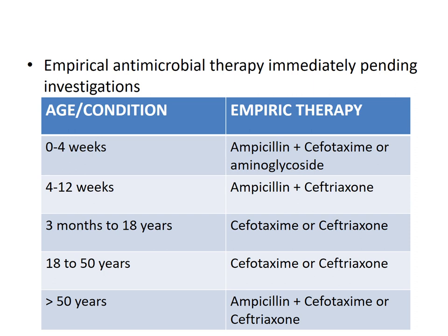Empirical antimicrobial therapy by age group: for neonates 0–4 weeks, ampicillin and cefotaxime or aminoglycosides; for 4–12 weeks, ampicillin and ceftriaxone; for 3 months to 18 years, cefotaxime or ceftriaxone; for 18 to 50 years, cefotaxime or ceftriaxone; for more than 50 years, ampicillin and cefotaxime or ceftriaxone.